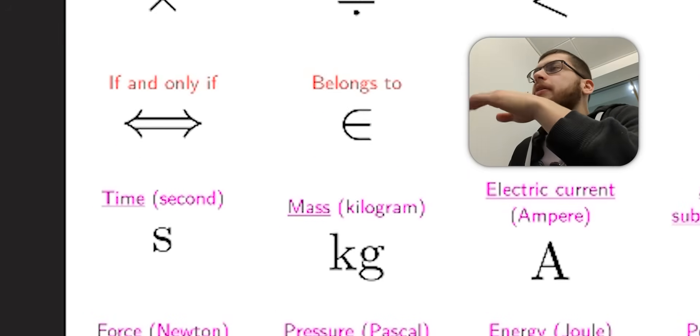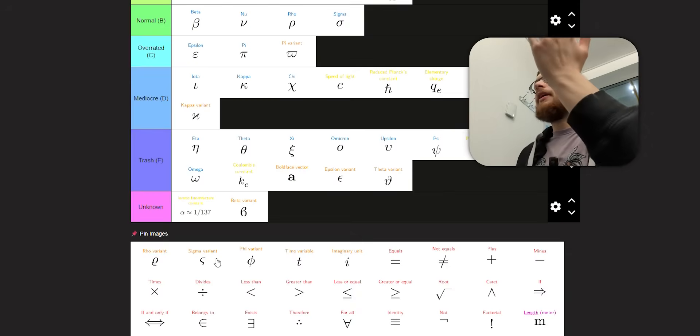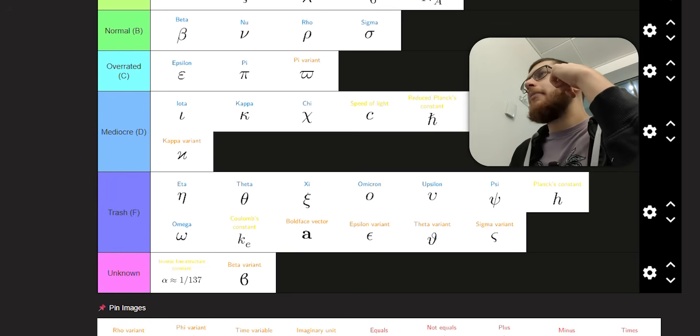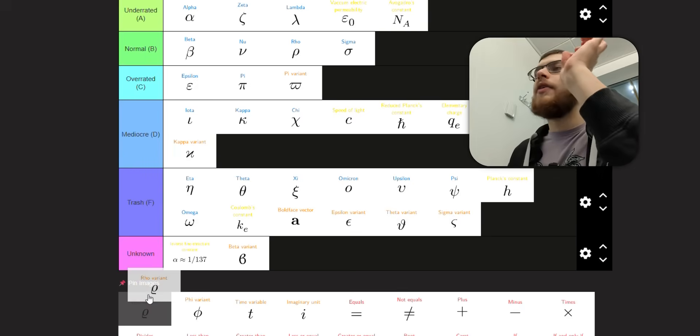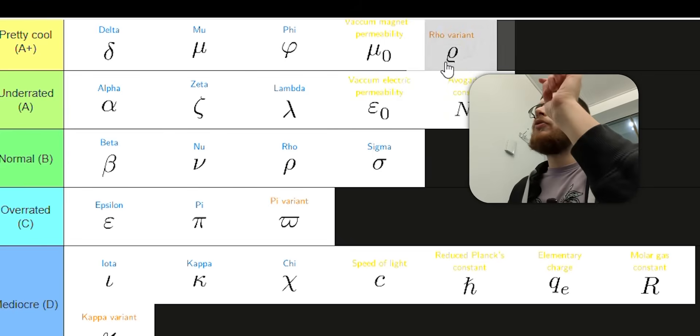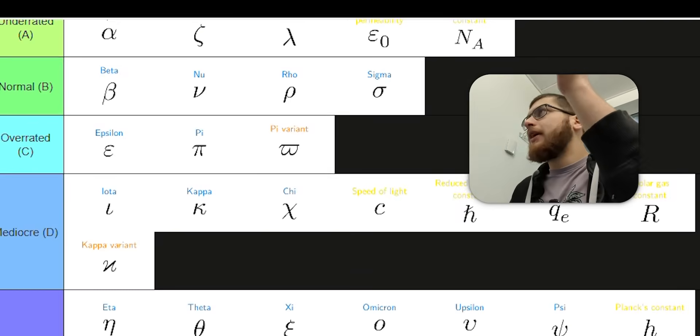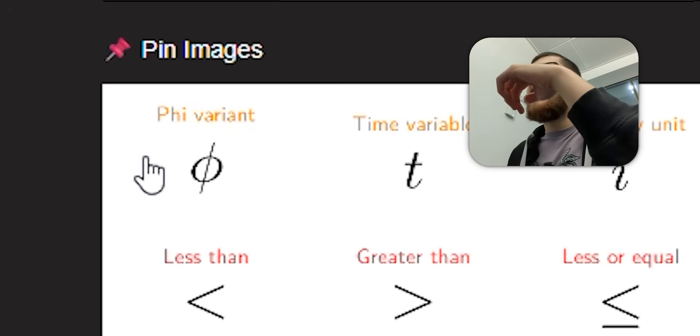Now we've got rho variant and sigma variant. Sigma variant is not very good because it can be confused with zeta or epsilon even. Or it can be even confused with C when you write it down. So I'm going to put it in trash. Rho variant, however, that is quite a unique symbol. And it's also quite beautiful and easy to write. So that's pretty cool in my opinion. Phi variant. This, I actually don't like. Because whenever you write this down with the line and then the circle, it never looks as good as it looks here. It just looks a bit trash.